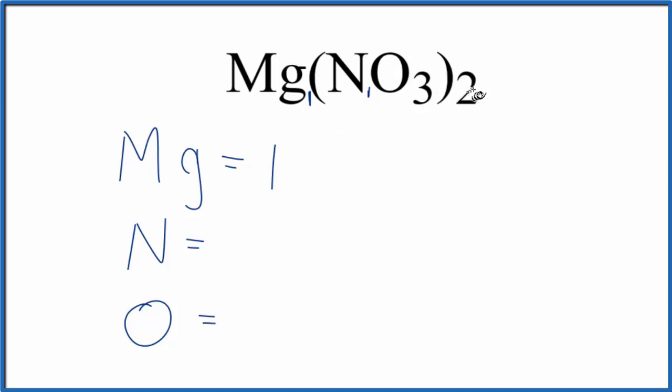Two times one gives us two nitrogen atoms. Two times the three oxygens gives us six oxygen atoms in magnesium nitrate.